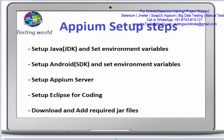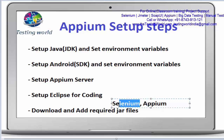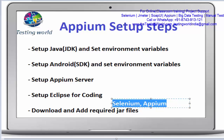Welcome to the Testing World. In this session I'll show you the last step of the Appium installation process. We are going to download and add the required JAR files. We need two JAR files: one is for Selenium and one is for Appium. Android and iOS specific libraries come with the Appium JAR file, and common WebDriver operations come with the Selenium JAR file, so we need both.